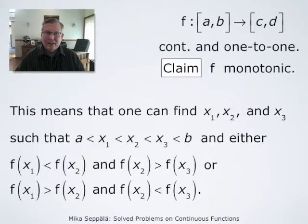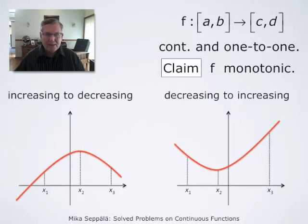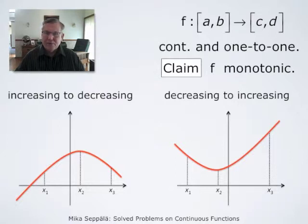Or the other way around: f(x1) > f(x2) and f(x2) < f(x3). These two graphs illustrate this situation. If f is first increasing and then decreasing, its graph looks like the red curve on the left. If it is first decreasing and then increasing, it looks like the graph on the right.